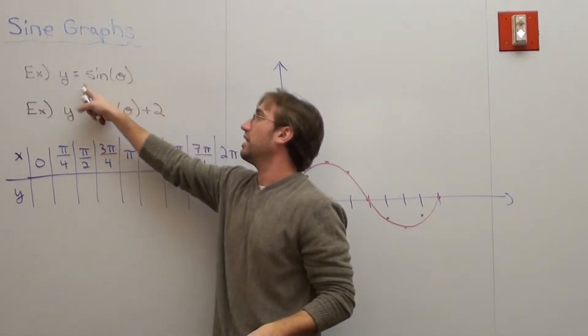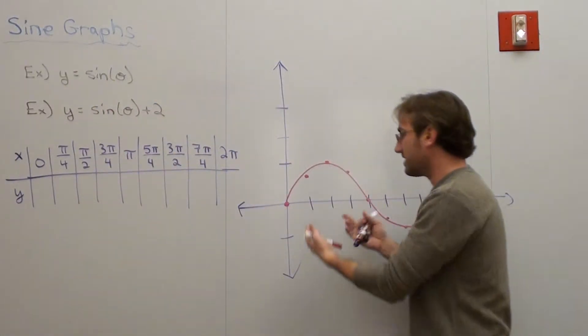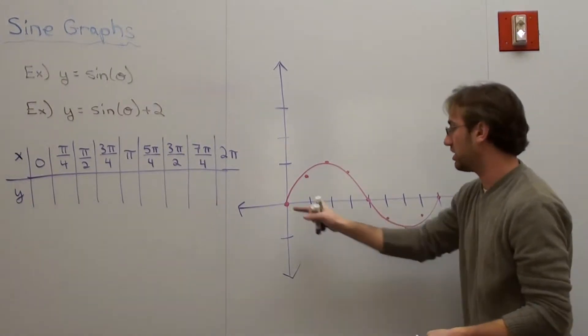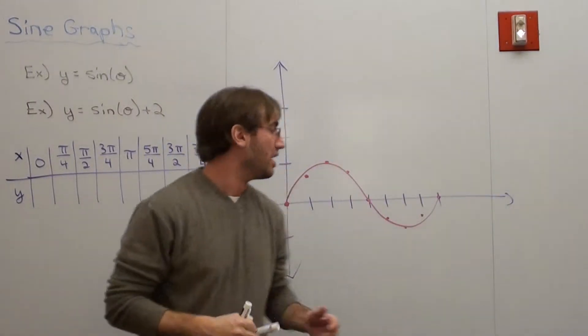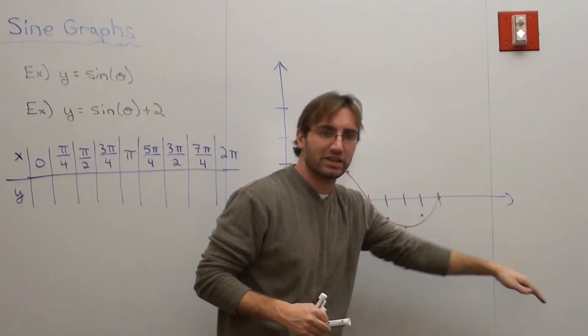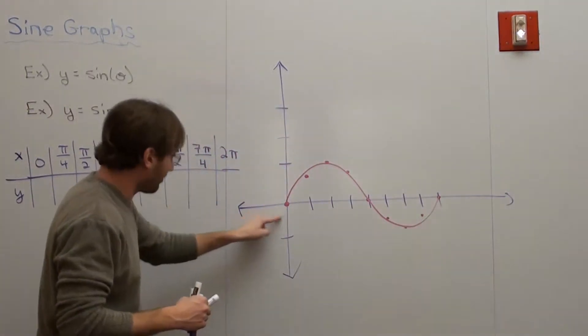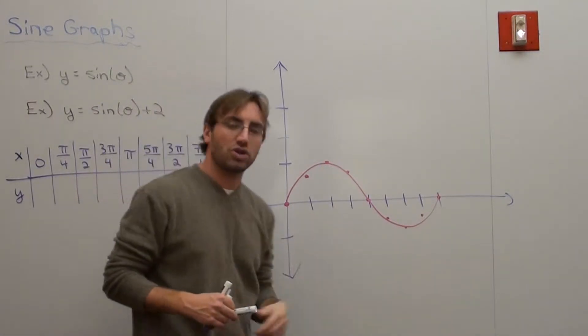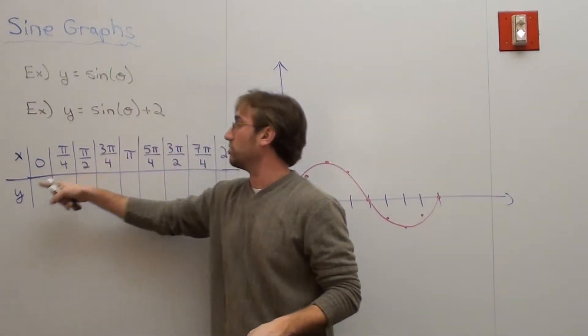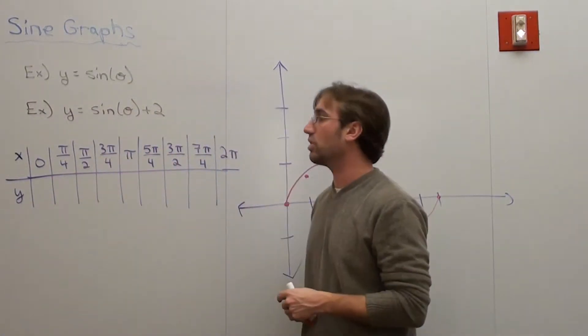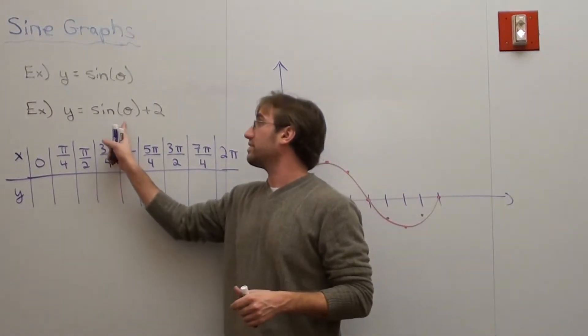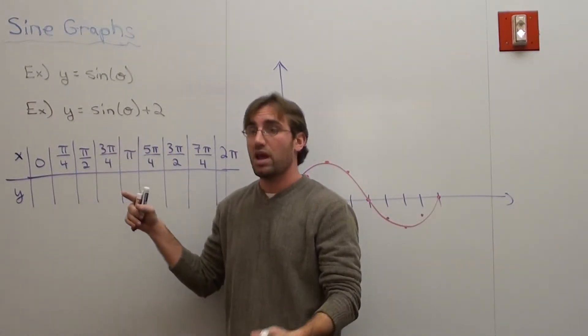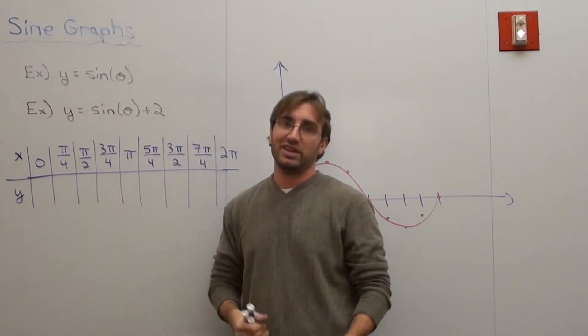I have two problems here. Now, this y equals sine of theta is this graph as best as I can do it. I only did it from 0 to 2 pi, or 0 to 360, but the graph would continue to go like that, and it would continue to go like that. So, I'm going to show you what this graph happens to look like using the table. Now, let's go ahead and figure it out.